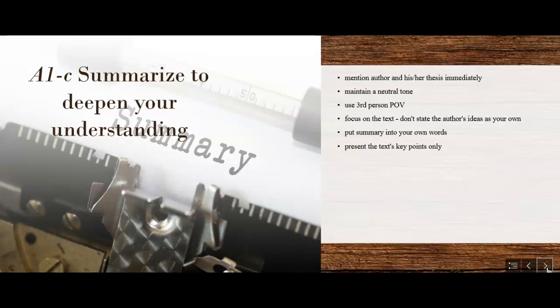These are the basics. In the first line of your summary, a summary is going to be a healthy paragraph. Include the author and the author's thesis immediately, not word for word. We are not quoting here. We are going to quote sparingly on these summaries. But you do need to tell what the author is arguing. You're going to maintain a neutral tone because this is not about your opinion at all. You are just relaying what the author has in his or her text.